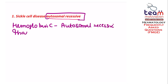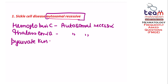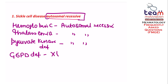Thalassemia is again autosomal recessive. Pyruvate kinase deficiency is also autosomal recessive. Then G6PD — glucose-6-phosphate dehydrogenase deficiency — that is X-linked recessive.